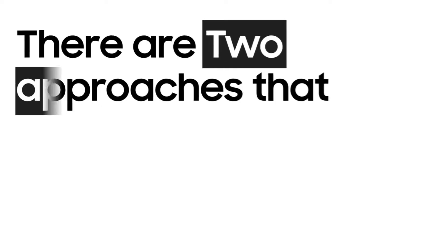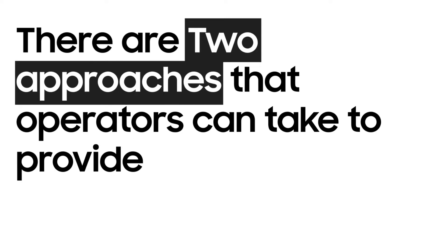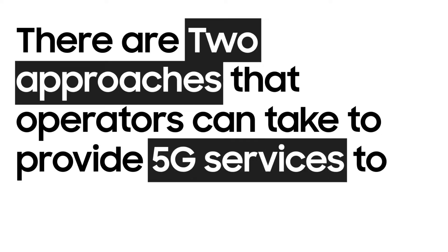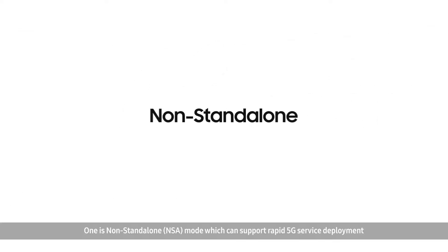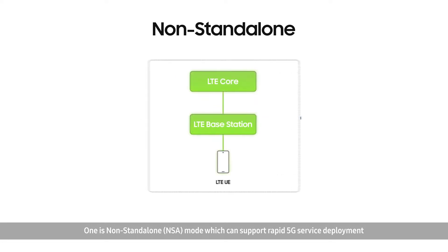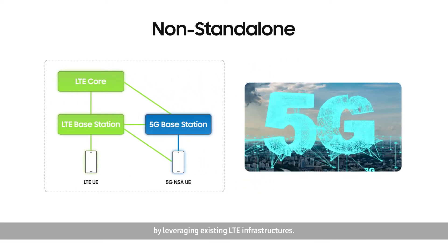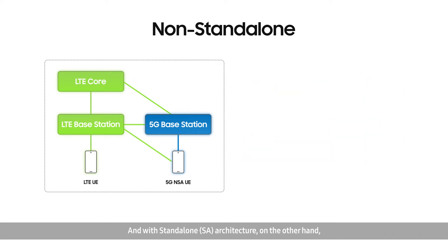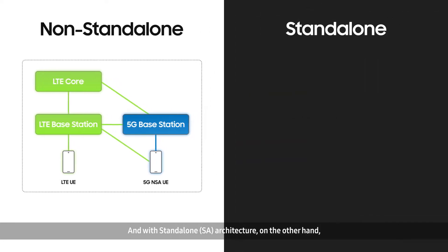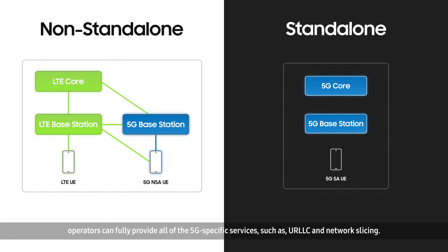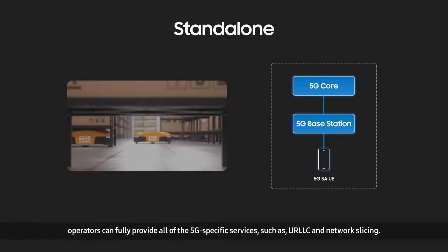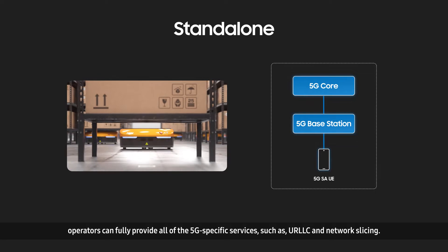There are two approaches that operators can take to provide 5G services to their customers. One is non-standalone mode, which can support rapid 5G service deployment by leveraging existing LTE infrastructures. And with standalone architecture, on the other hand, operators can fully provide all of the 5G-specific services, such as URLLC and network slicing.